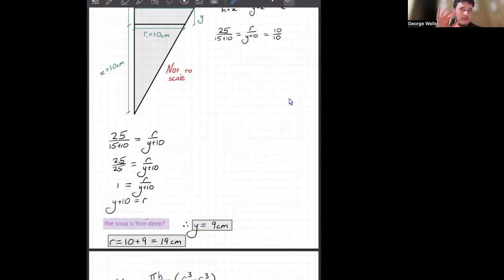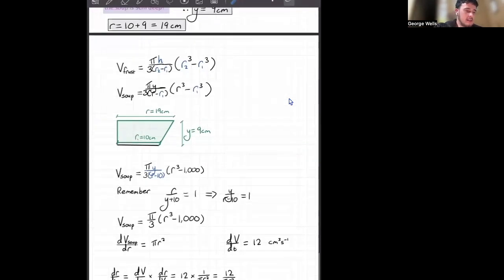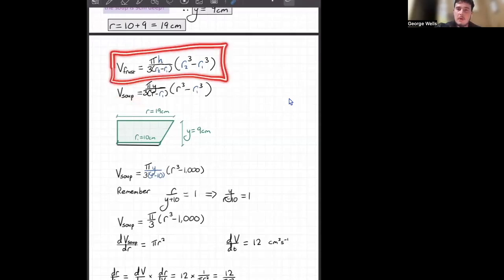Okay, now we're on to the last little legs of this question. We are now trying to get the volume of our soup. And the volume of our soup can still be modeled by a frustum.